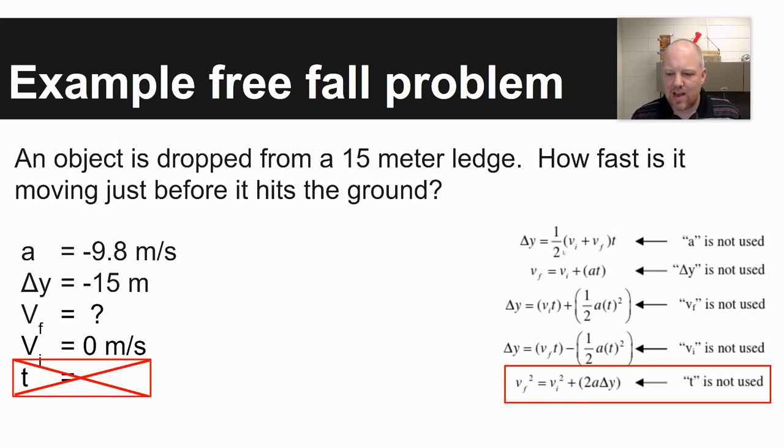What that means is you're not using time. And so time is not found in the bottom equation shown on the bottom right of this page. And so we're going to use the equation listed there. Vf squared is equal to vi squared plus 2a delta y.